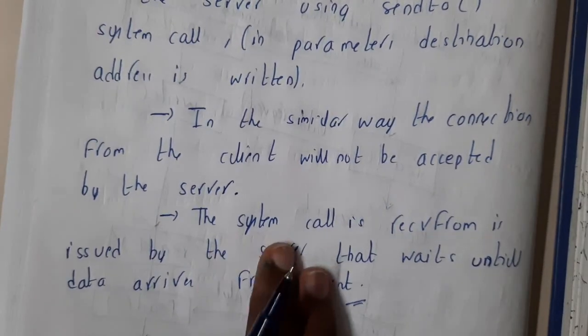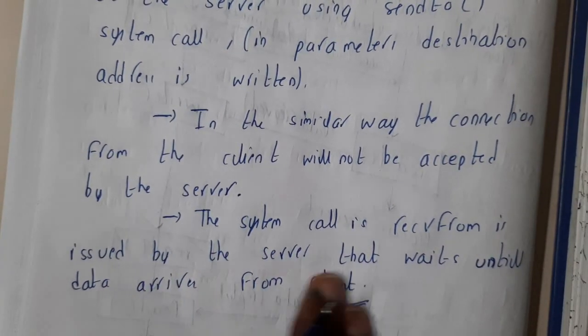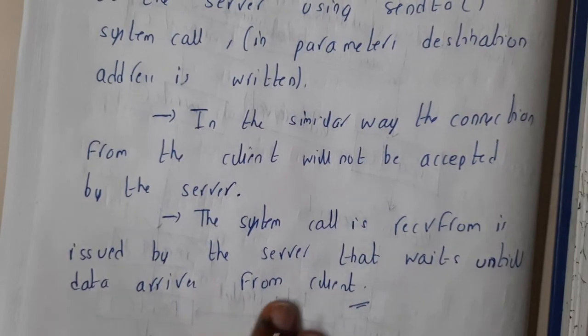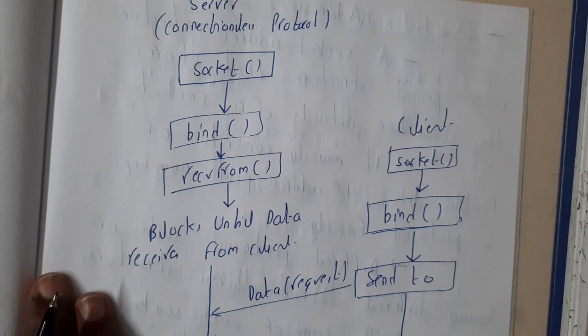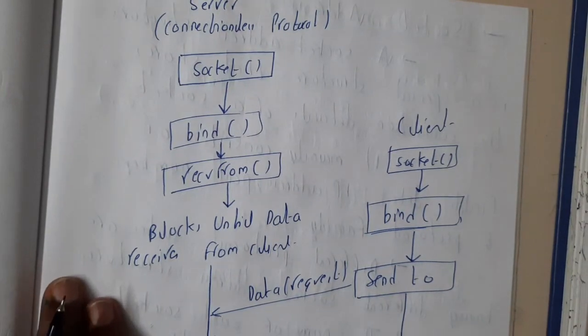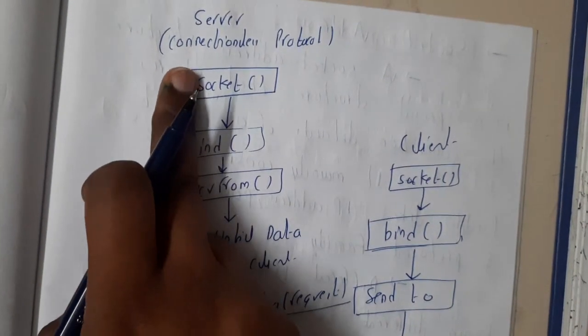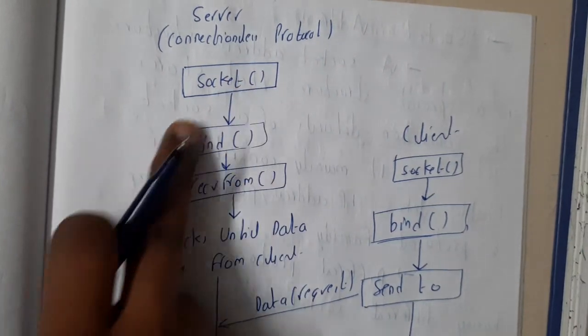The system call receive from is issued at the server side that will wait until the datagram arrives at the client. If you just go through the diagram, the diagram will be giving you more idea on these topics. So initially, you will be having a server which is connectionless, so it will be creating its own socket.